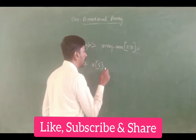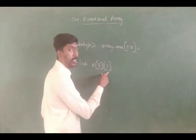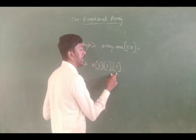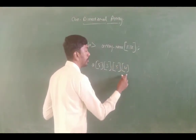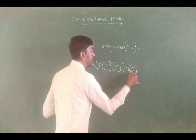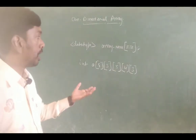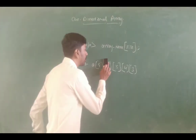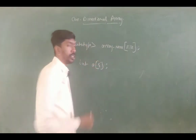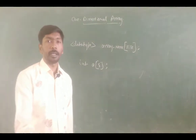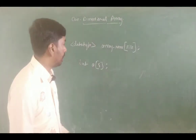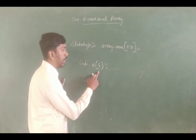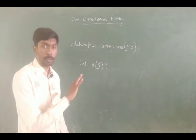If we use two sets of square brackets, that is a two dimensional array. If we use another one, three dimensional array. If we use another set of square brackets, four dimensional array. So, one dimensional array means it is a homogenous collection of data elements with one set of square brackets.